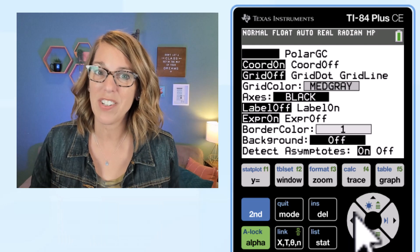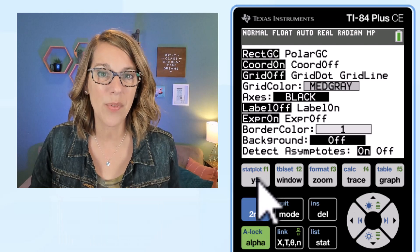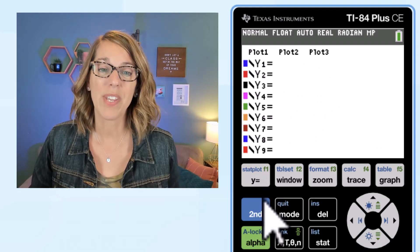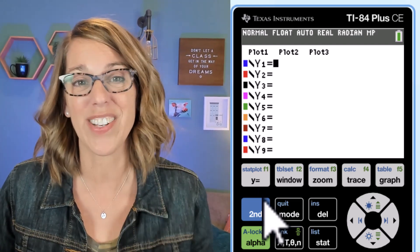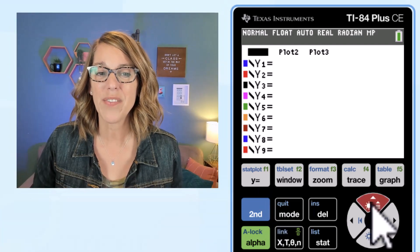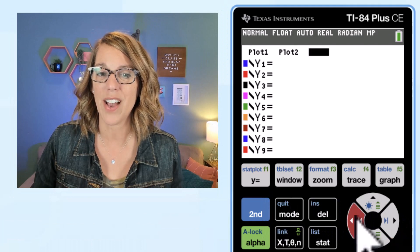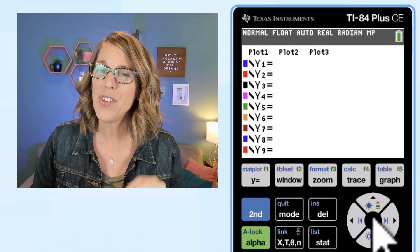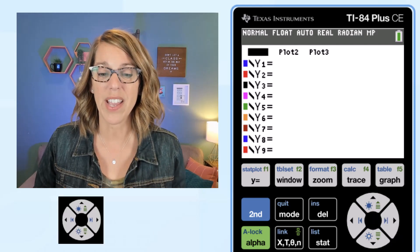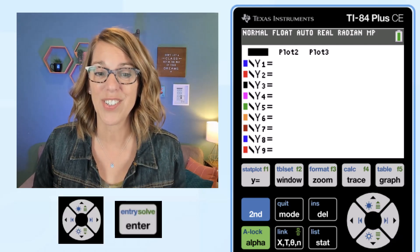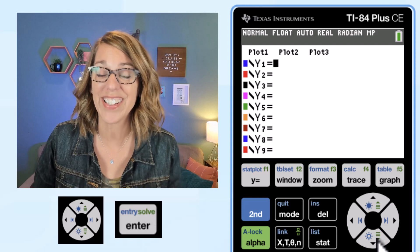Next let's put an equation in. I'm gonna go to my Y equals button to do that. So I'm here in my equation screen and I also want yours to look just like mine. Notice how none of the plots up here along the top are highlighted. If you do have one highlighted let's unhighlight that by arrowing up and then clicking on enter to select or unselect.